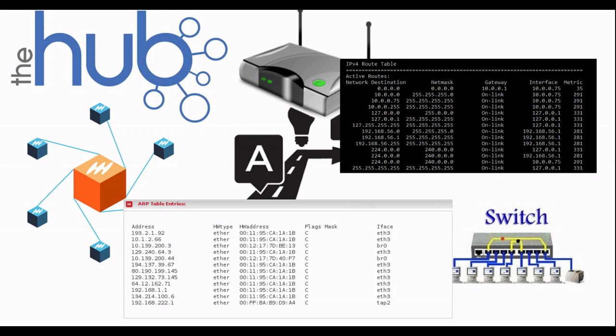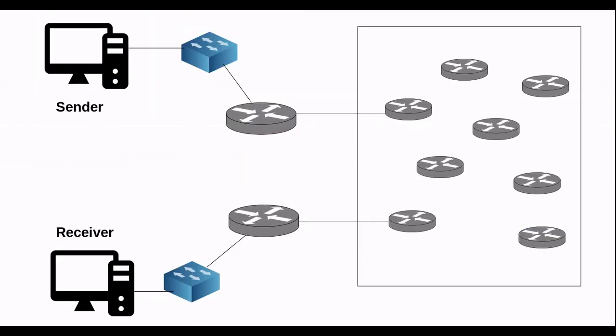Now, there are two types of routing: static routing and dynamic routing. Let's check how the router routes. There is a sender and a receiver. If you look at the receiver, you can send a message to the receiver.